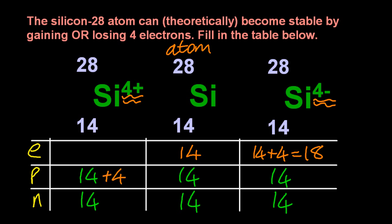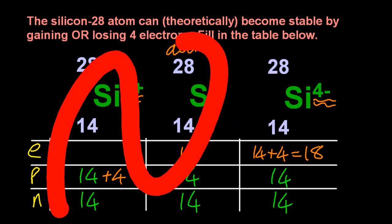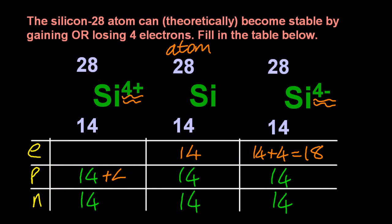But for 4 plus, you might think, oh, it's gained four protons. No, no, no. If you gain protons, you've changed the element. It won't be silicon anymore. And you can't gain protons in chemistry. In chemistry, we just mess about with the electrons. So we've lost four negative electrons.